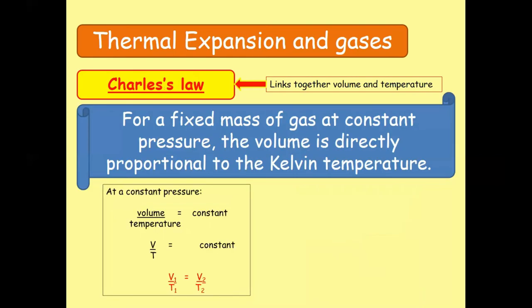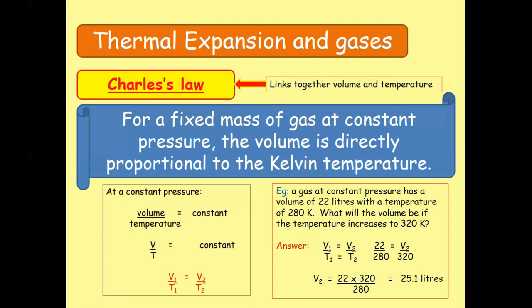Charles' Law represents a relationship between volume and temperature. According to Charles' Law, for a fixed mass of a gas at constant pressure, the volume is directly proportional to the kelvin or absolute temperature. If we have a temperature in degrees Celsius, we can easily convert it to kelvin. An example: when a car is moving, the tire gets heated, causing the temperature of air in the tire to rise. According to the kinetic model of gas, a rise in temperature causes an increase in the average speed of air molecules, which affects the volume.